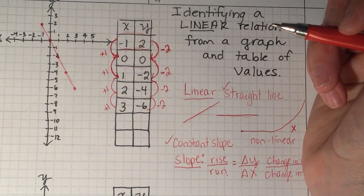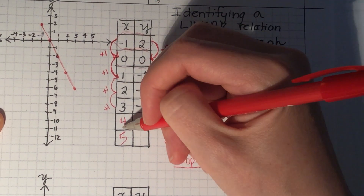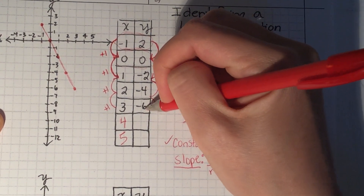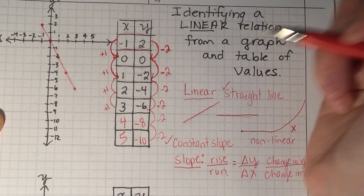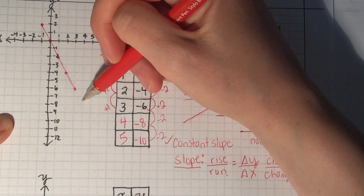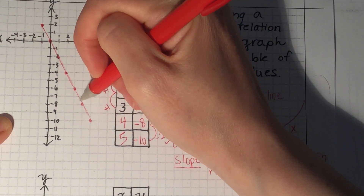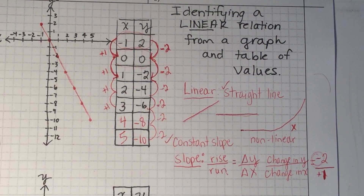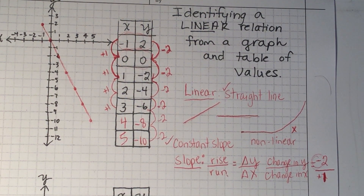If I wanted to continue this table of values, that would be easy because I can see the pattern. My x's are going up by one, so I can put four and five as the next x values. I can extrapolate that the y values will be negative eight and negative ten, because I'm continuing the pattern of decreasing by two every time. We would see that these still follow the same straight line because my slope continues down by two and over one — the slope remains the same.